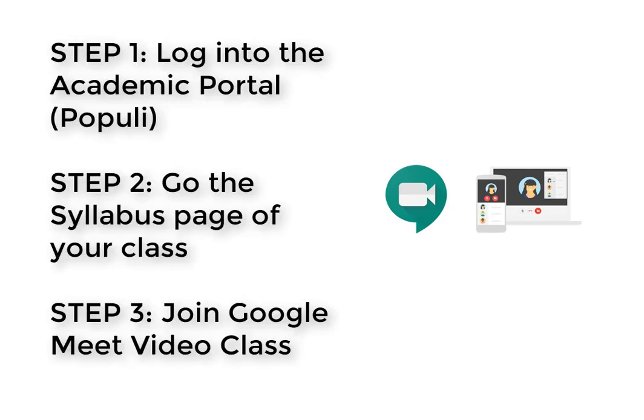Let's review the three simple steps you need to know to participate in live classes. First, log into your academic portal in your Populi account, then go to your class page and the syllabus page, and locate the link to join the class. Then join the Google Meet video class by following that link. That's pretty much it.